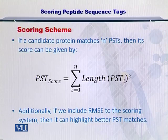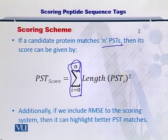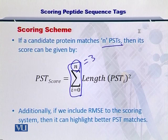The scoring scheme can be very simple. To begin with, if a candidate protein matches n number of PSTs, then its score can be given by a simple summation over n PSTs. For example, if protein A has 3 PSTs and protein B has 2 PSTs, then n equals 3 in the case of protein A or equals 2 in the case of protein B.